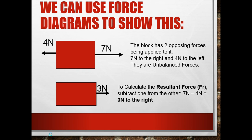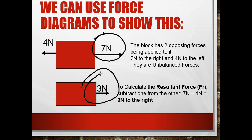Here are some force diagrams, and we're going to practice this in class. You have an object, and a lot of times that object is going to be represented by a box. Here we have a box, and the block has two opposing forces being applied to it — seven newtons to the right and four newtons to the left. Newton is the unit for force. They're unbalanced forces since they're not the same amount. To calculate the resultant force — in other words, how much force you have left after they cancel each other out — you subtract: seven minus four is three. They go in the direction of the bigger one, so seven is bigger than four, and your answer is three newtons to the right.